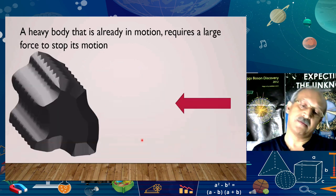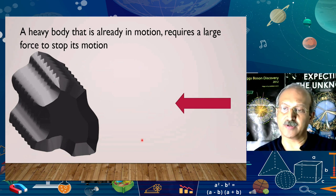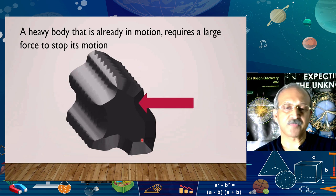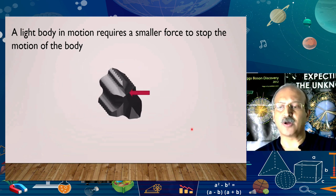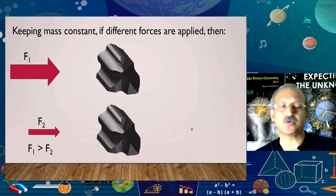Now, the previous case was the body at rest — you applied a force to move it. Now let us look at a heavy body that is already in motion and you want to stop it. A large force is required. To stop a heavy body, a very large force is required. In comparison, look at this lighter body — a lighter body is in motion and only a small force is required to stop it. All this time we varied the mass of the body, so the force required was different.